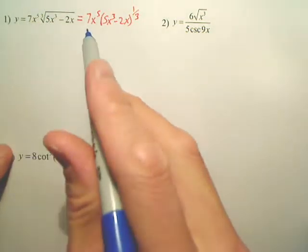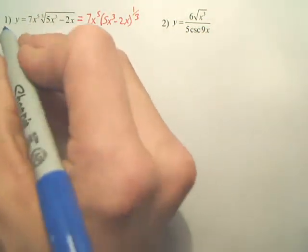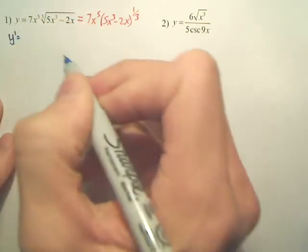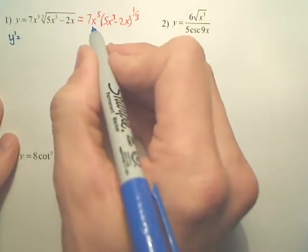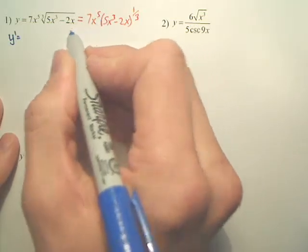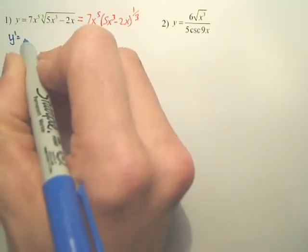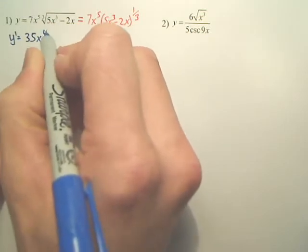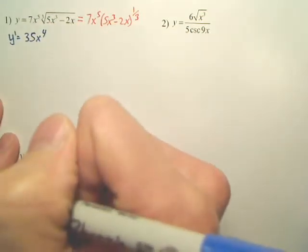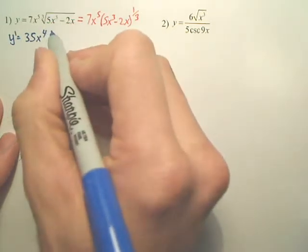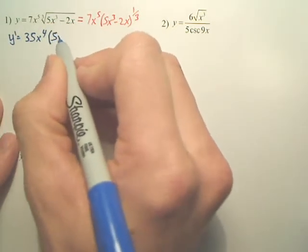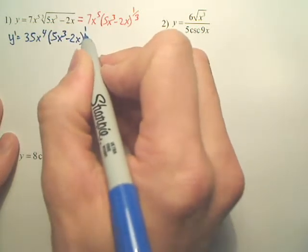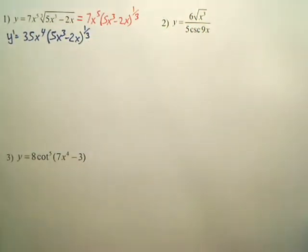Now, I could also just pull the 7 out and just leave it out, but I'm just going to leave it in as I go. Anywho, y prime, this is a product rule, derive the first piece. So the derivative of 7x to the 5th is 35x to the 4th. Leave the second part as is.